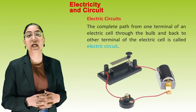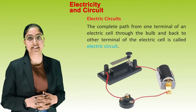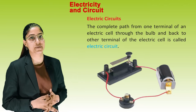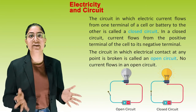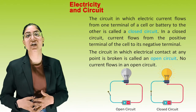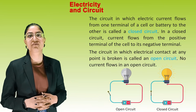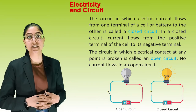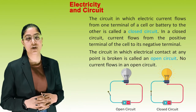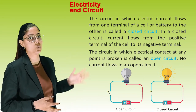Electric circuits. The complete path from one terminal of an electric cell through the bulb and back to the other terminal of the electric cell is called an electric circuit. The circuit in which electric current flows from one terminal of a cell to the other is called a closed circuit. In a closed circuit, current flows from the positive terminal to the negative terminal. The circuit in which electric contact at any point is broken is called an open circuit — no current flows in an open circuit.